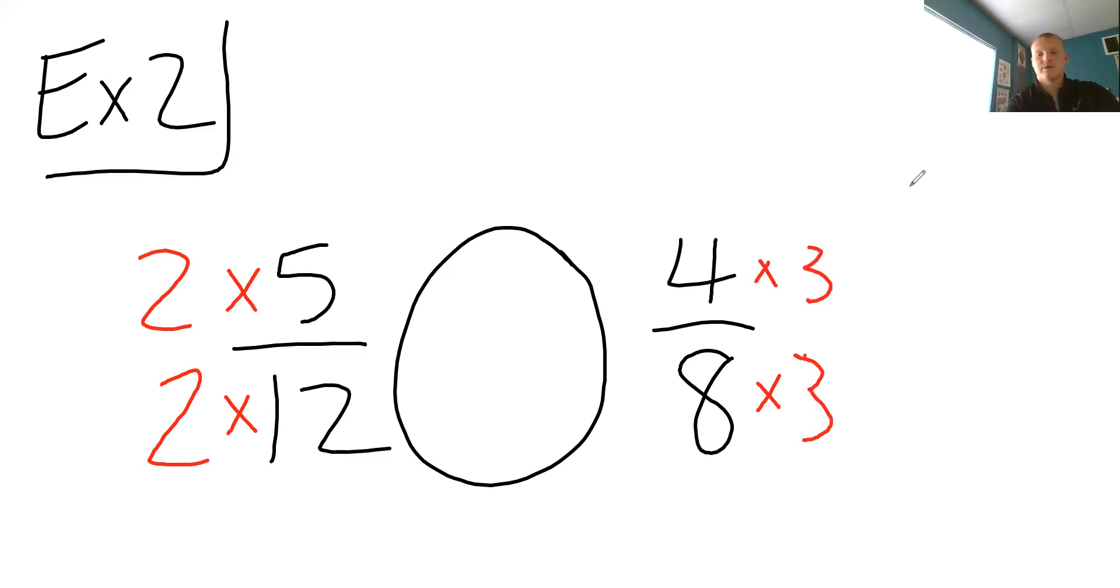So 8 times 2 times 3. So I have 12 over... Wait a second. 8 times... Yeah, that's 24. So 12 over 24. And then 2 times 5 is 10. And then I have 10 over 24.